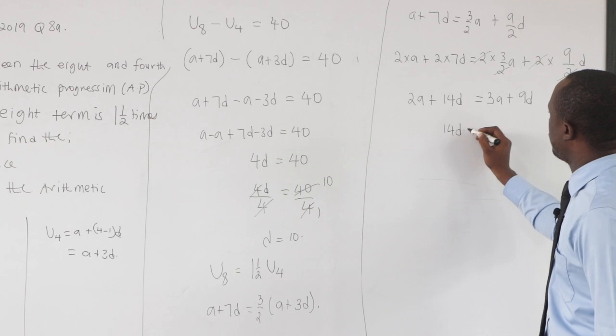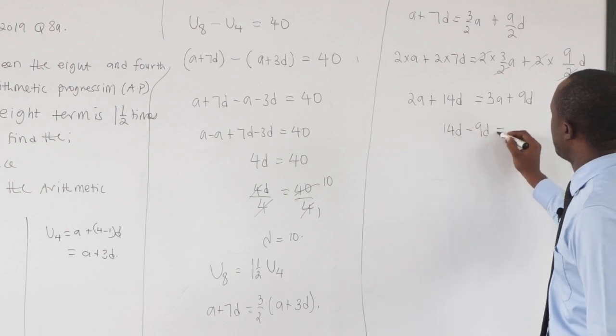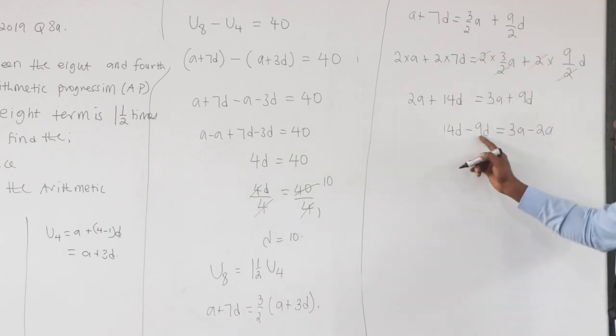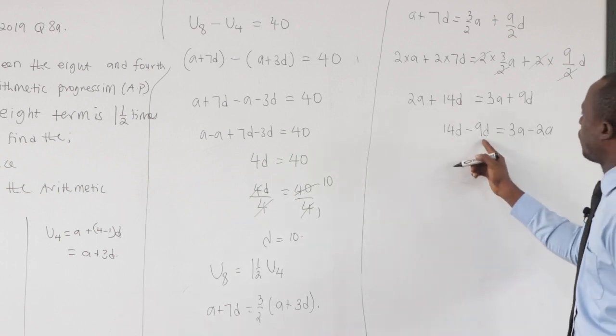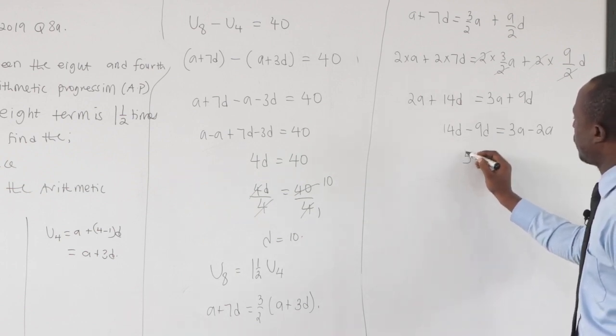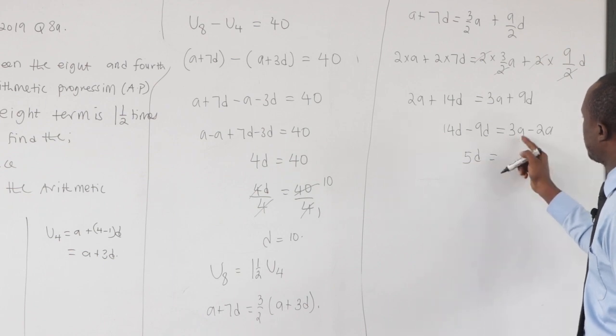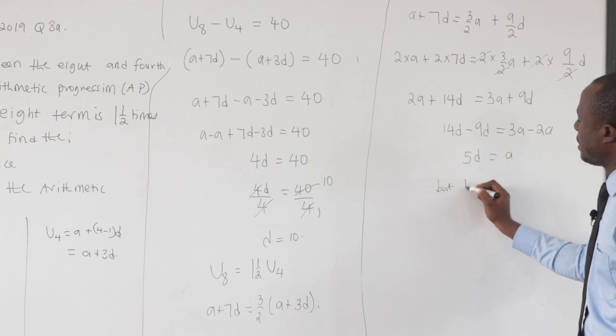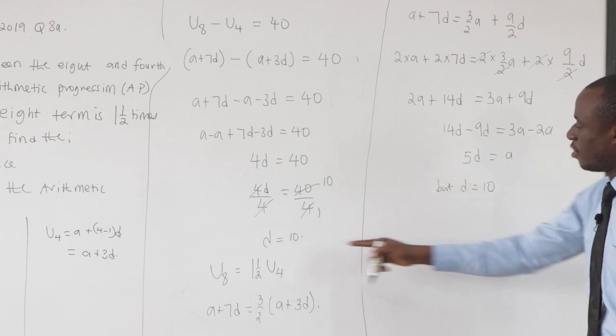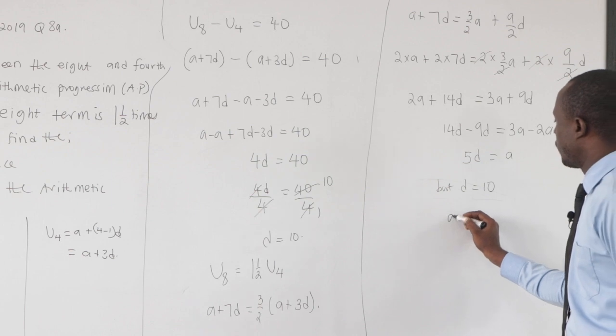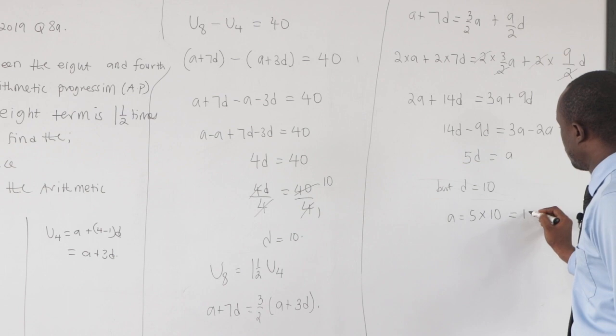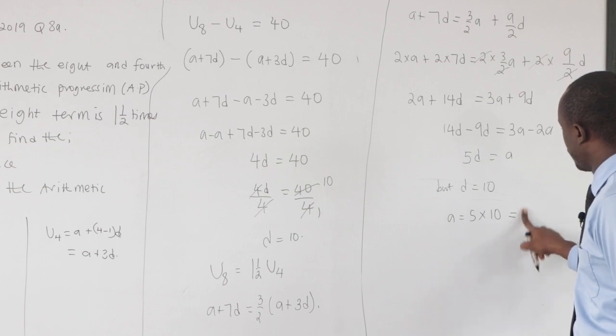So you can say that 14d - 9d = 3a - 2a. So 14d - 9d, that is 5d. And 3a - 2a, that is a. But we know d to be 10. So we have a = 5 × 10. And this will give us 50.